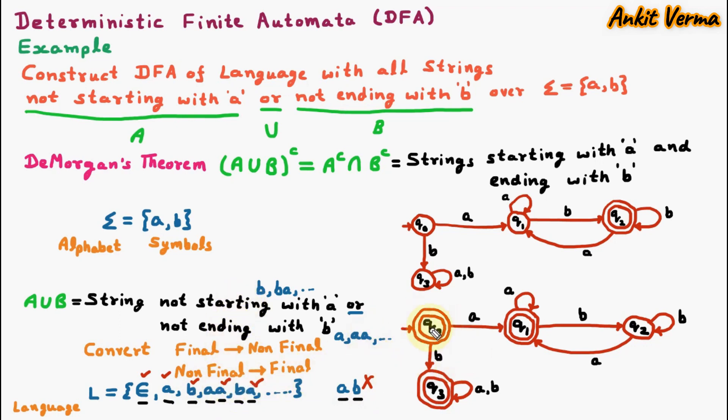So this is the DFA for strings not starting with A or not ending with B. The DFA correctly rejects strings not in the language and accepts strings that are part of the language. That's all for today. Thank you.